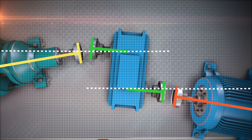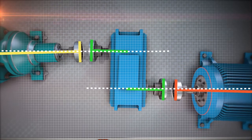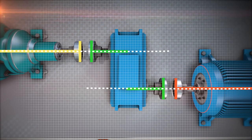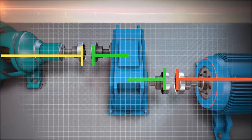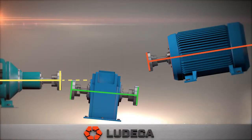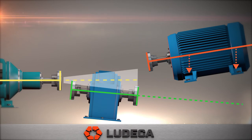Once we know the misalignment between the machines, we can plan on making the smallest correction possible across the machine train. A common example is when the end machine is considered the reference machine. Notice that the back of the motor needs a large adjustment to be aligned.